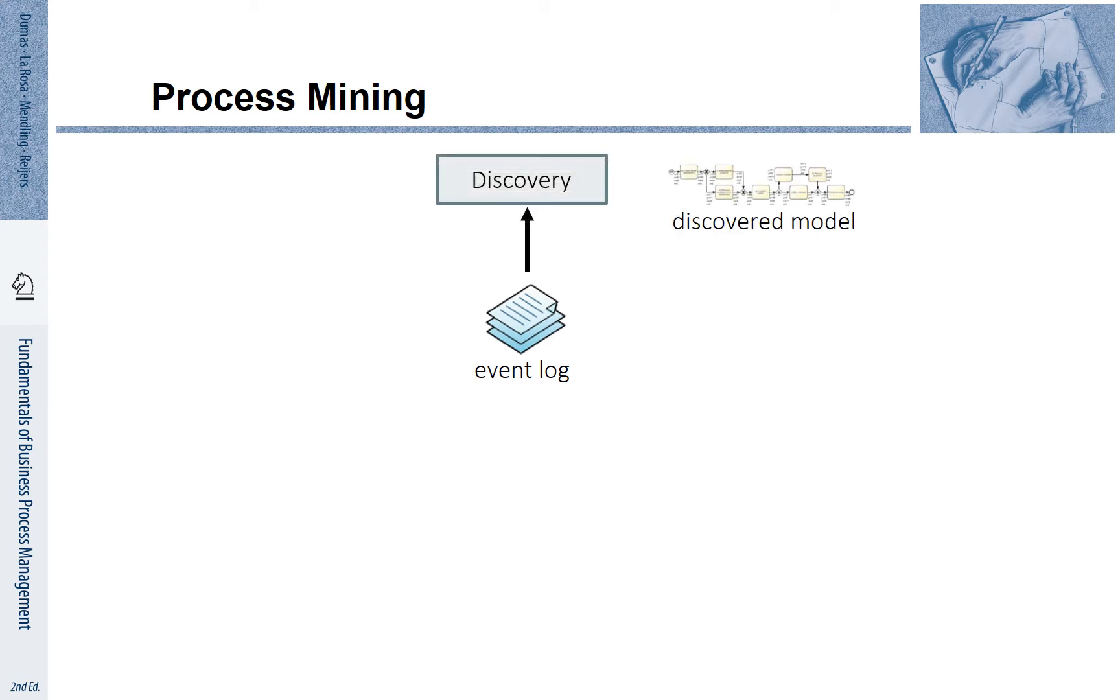We can use these event logs to automatically discover a business process model. The discovered model helps us to understand what the data actually tells us about the different cases in terms of a model. This discovered process model is an as-is process model that captures those parts of the process that are stored in information systems.